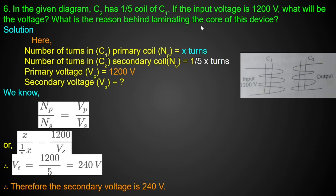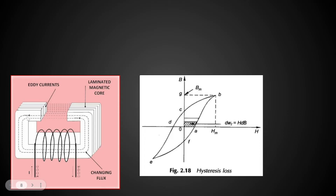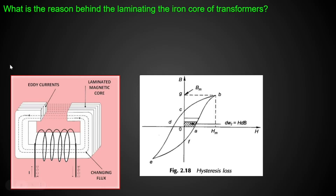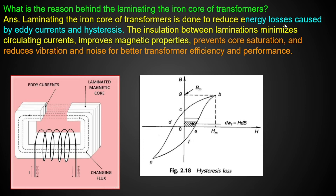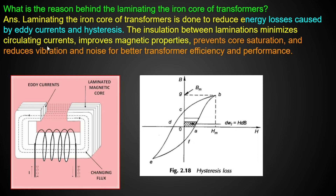The next question: what is the reason behind laminating the core of a transformer? Laminating the iron core of the transformer is done to reduce energy losses caused by eddy currents and hysteresis. The insulation between the laminations minimizes eddy current losses within the core.